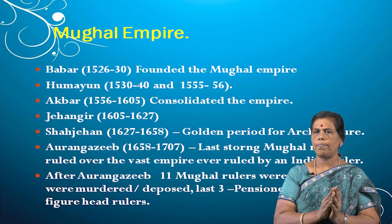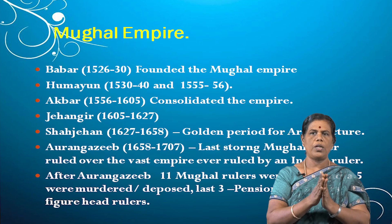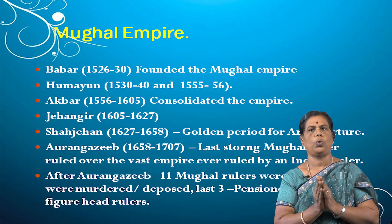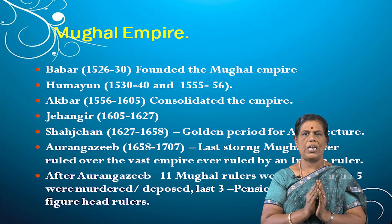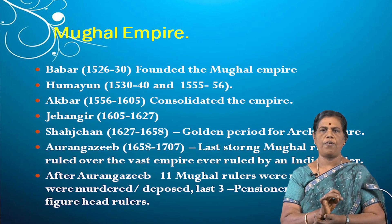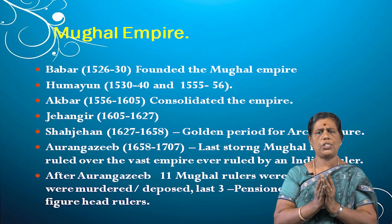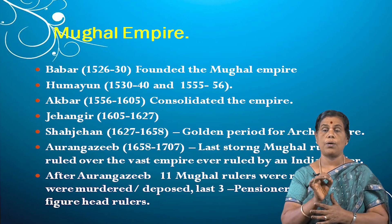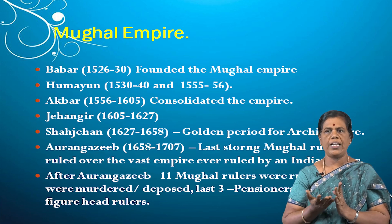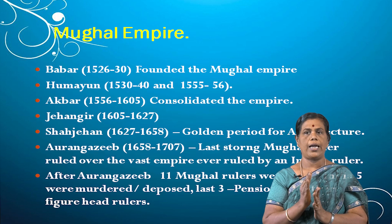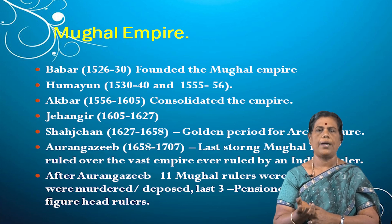By his benevolent rule, Akbar got the title 'Akbar the Great' and consolidated the Empire. He ruled India from 1556 to 1605. The next ruler was Jahangir, who ruled from 1605 to 1627. Jahangir gave trade concessions to foreigners. This is a most important event for the decline of the Mughal Empire — the British attended the court of Jahangir and he gave them trade concessions.